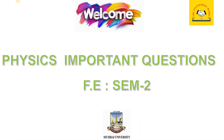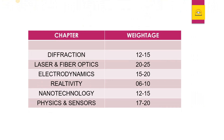Welcome to the Engineering Buddy channel. Today's video covers important physics questions for Semester 2. The weightage for each chapter is: Chapter 1 (Diffraction) 12–15 marks, Chapter 2 (Laser and Fiber Optics) 20–25 marks, Chapter 3 15–20 marks, Chapter 4 6–10 marks, Chapter 5 12–15 marks, and Chapter 6 17–20 marks. Laser and Fiber Optics, Electrodynamics, and Physics and Sensors are among the most important chapters.